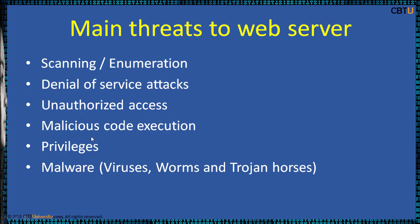The next threat is unauthorized access. Strengthen permissions and user access controls, secure web server user access permissions, and use .NET framework access control mechanisms including URL authorization. Attackers may also run malicious code on the web server to compromise it through weak configuration and unpatched servers. To counter this, configure the web server to reject URLs with dot-slash to prevent path traversal, and lock down system commands and utilities with ACLs.